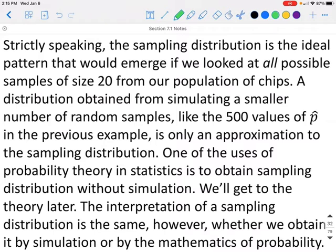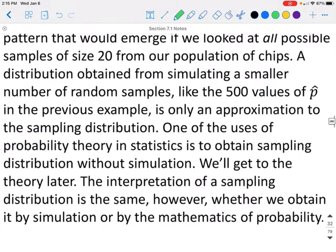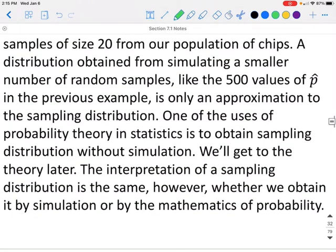Strictly speaking, the sampling distribution is the ideal pattern that would emerge if we look at all possible samples of size 20 from a population of chips. A distribution obtained from simulating a smaller number of random samples, like 500 values of p̂ in the previous example, is only an approximation to the sampling distribution. One of the uses of probability theory and statistics is to obtain sampling distributions without simulation. We'll get to this theory later.